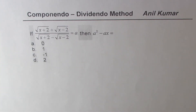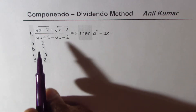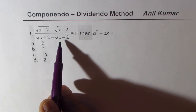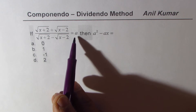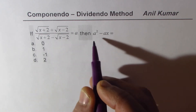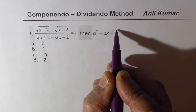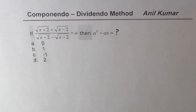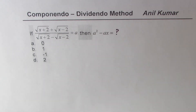The next question is: if the square root of (x plus 2) plus the square root of (x minus 2), divided by their difference, is equal to a, then what is a squared minus ax? Four choices are given; solve it and then look into my suggestions.